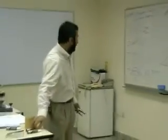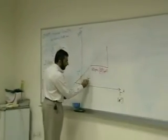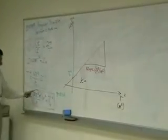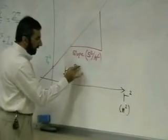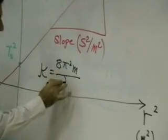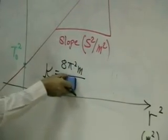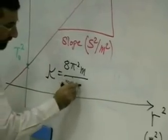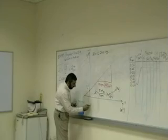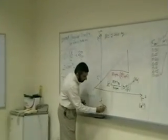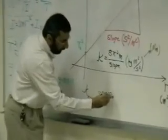Now I want to find chi. So chi is — I know the slope is equal to this one, right? So chi will equal 8 pi squared m over the slope. I will give you m — and m here is 0.240 kg. The expected chi — I will write it here: chi expected.